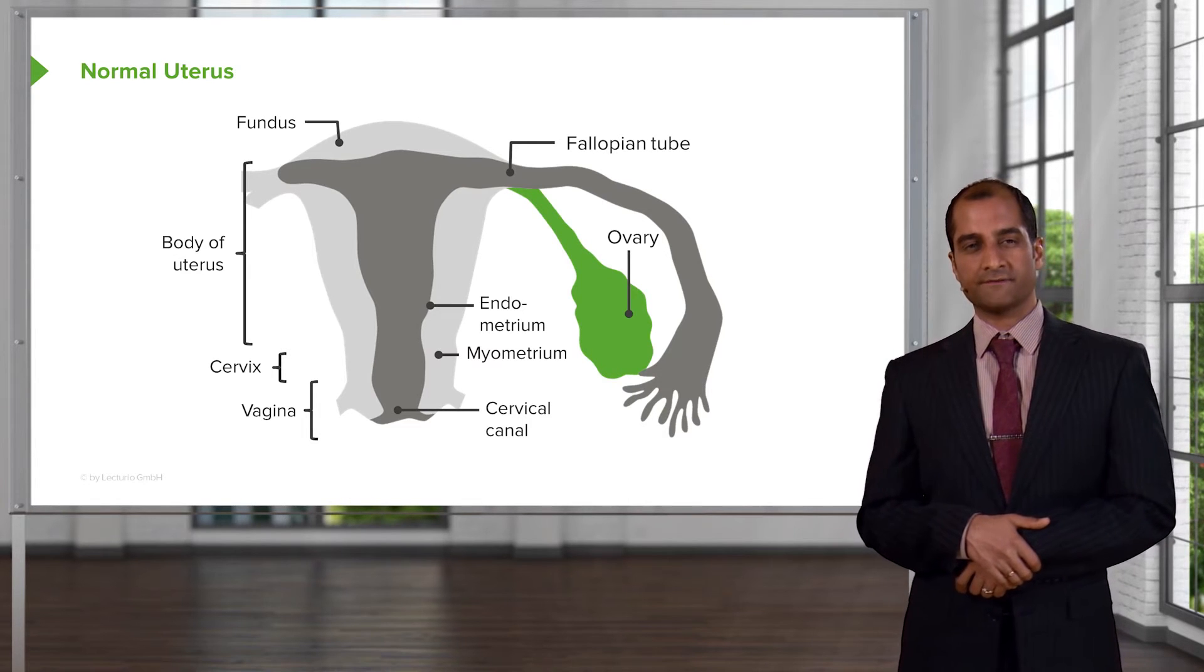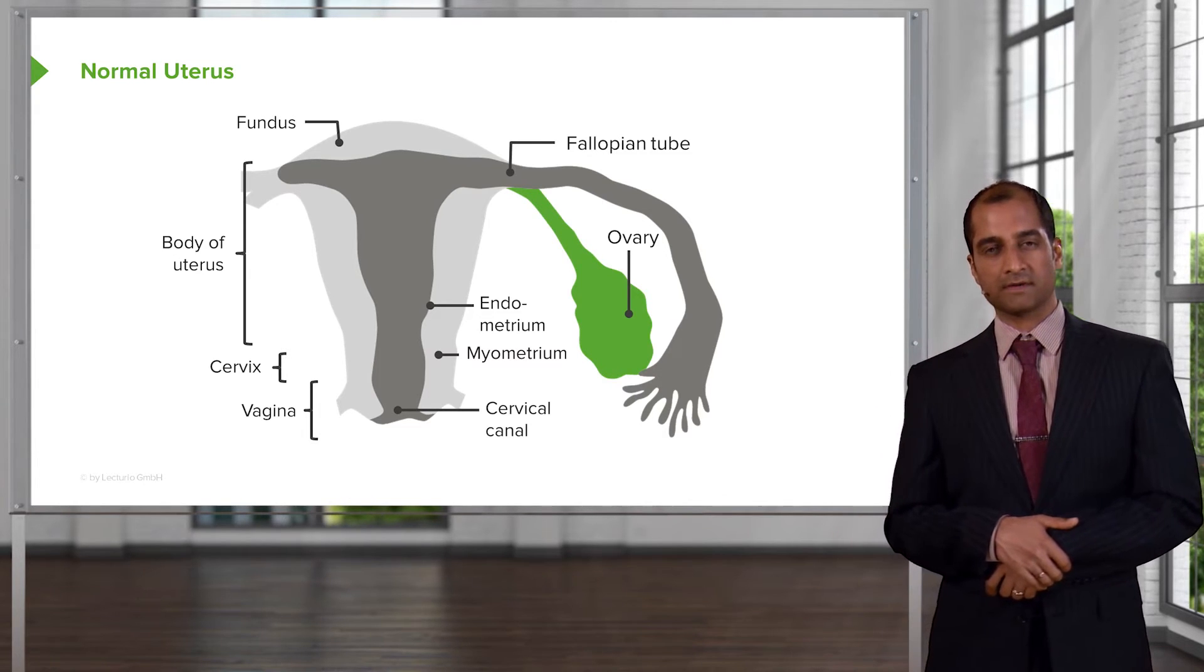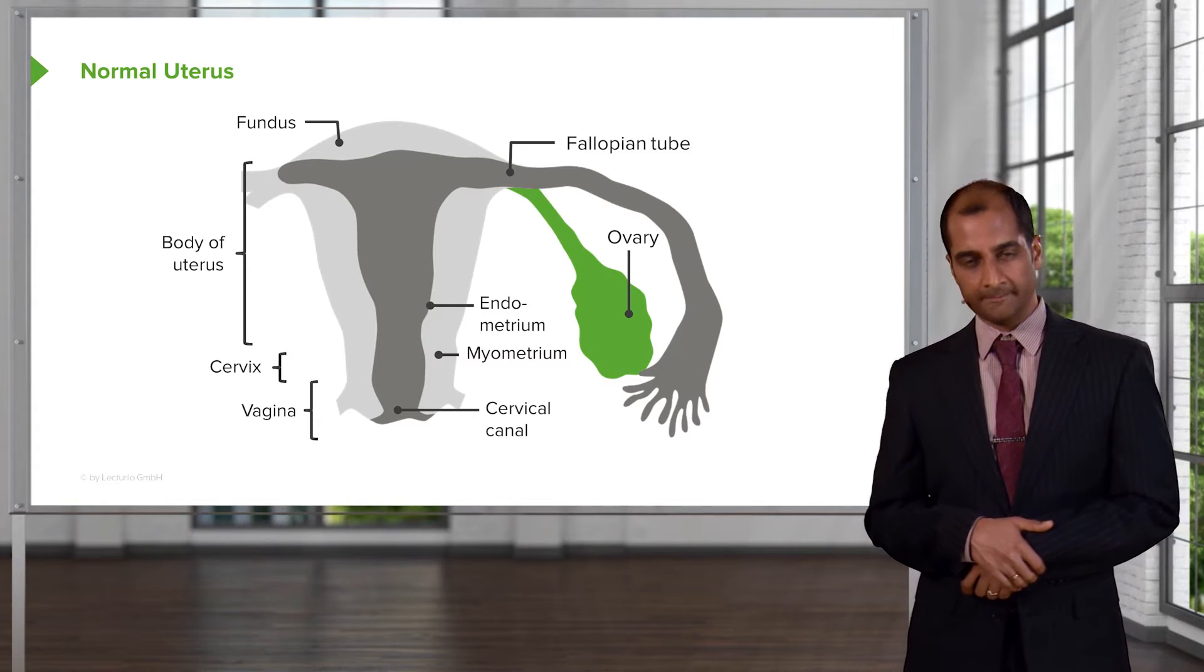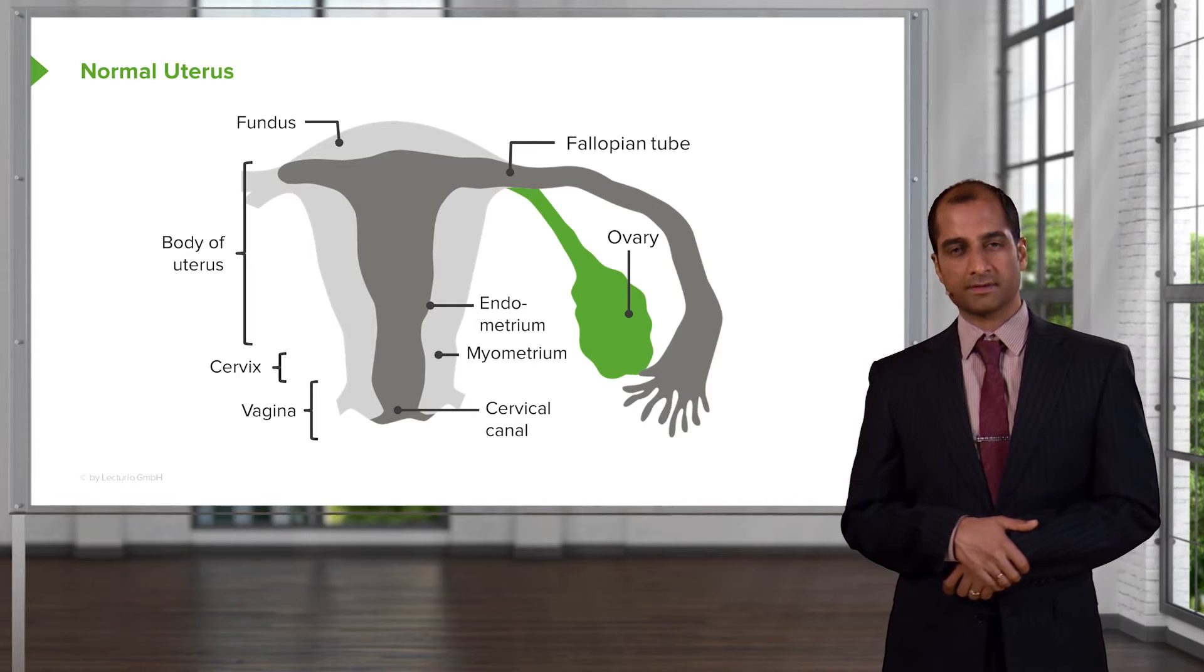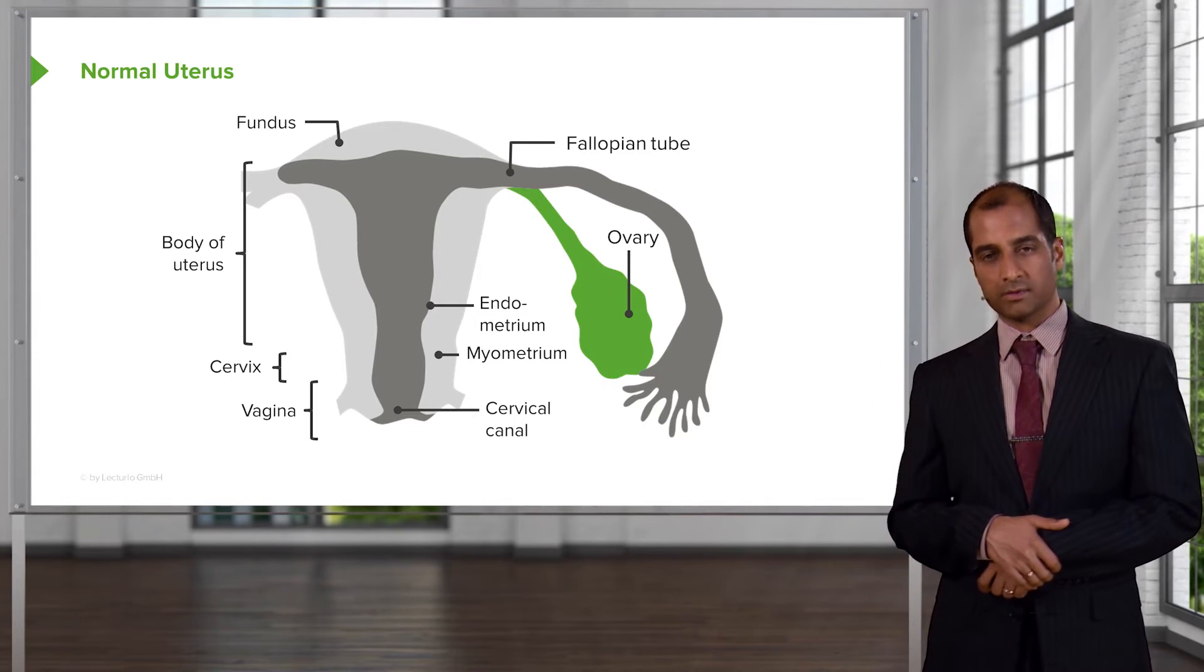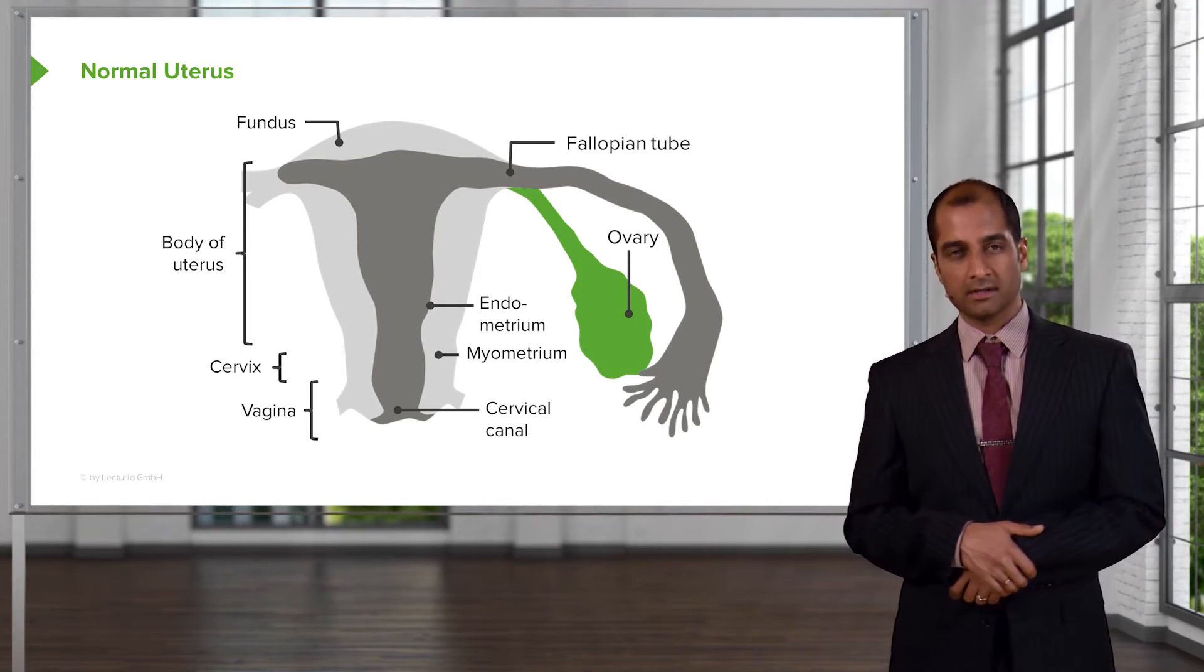We looked at sexually transmitted infections and those organisms that were relevant. During that time, we also referred to what may happen to the fallopian tube. Well, between the cervix and the fallopian tube is an important structure called the uterus.